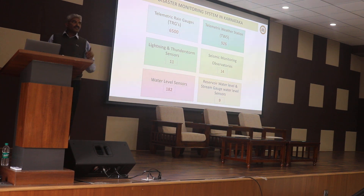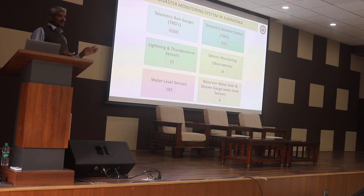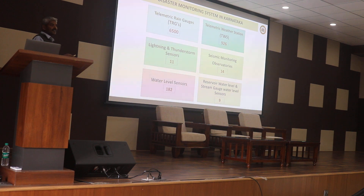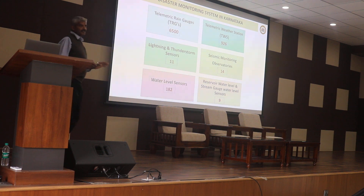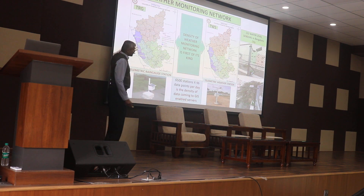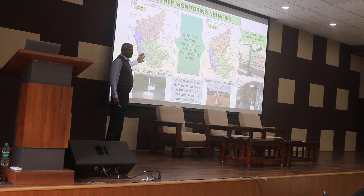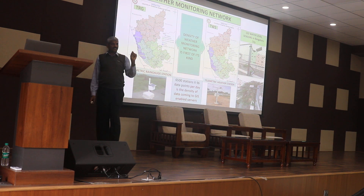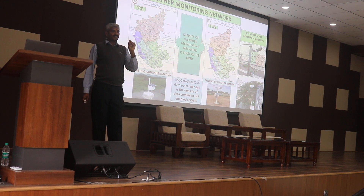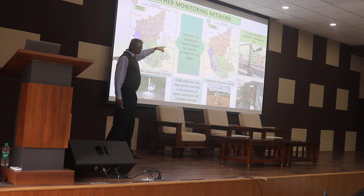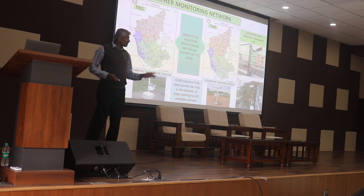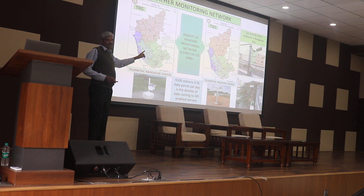Disaster management authorities from the entire country visit our center, which serves as a model. The density of rain gauge stations — placed at a 25 square kilometer grid — is not seen anywhere else in the country. Weather monitoring stations shown as red dots on the map are placed at a 250 square kilometer grid. This level of information is obtained up to Gram Panchayat level, whereas IMD only gets data from Taluka headquarters.